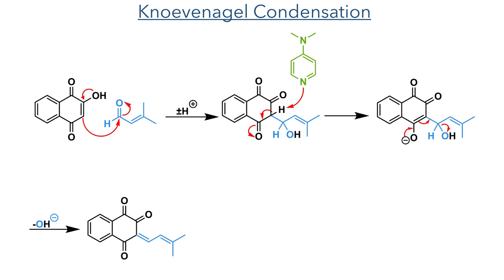The enol of lawsone adds to the aldehyde, and then the aldol addition product undergoes an elimination which is catalyzed by DMAP. This deprotonates the alpha position, promoting an E1-Cb elimination that produces a dienone.